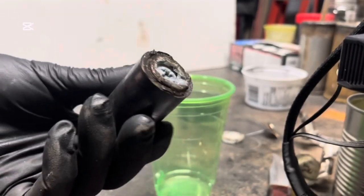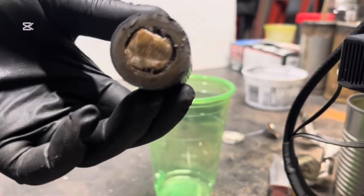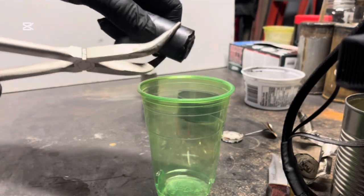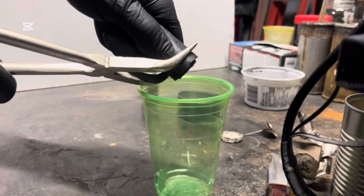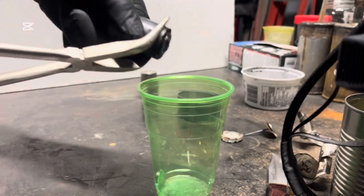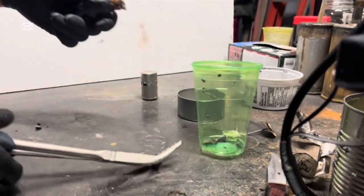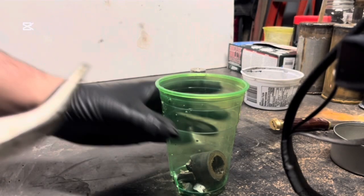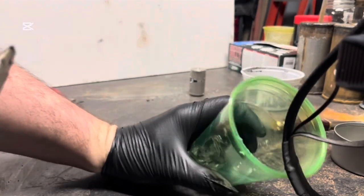So the actual manganese oxide can be collected in pretty much any container. It's pretty much safe to collect in. I'm going to collect it just in this plastic container.